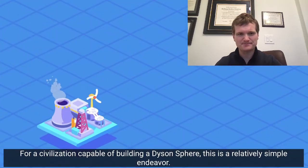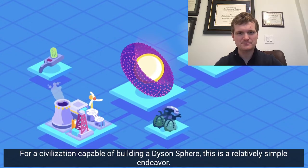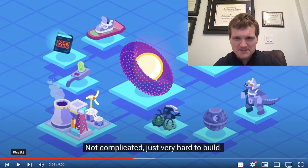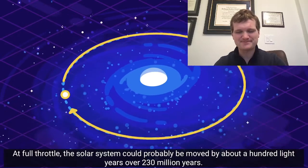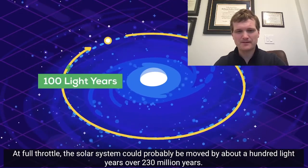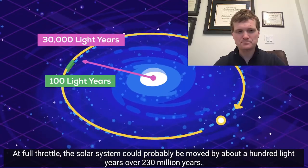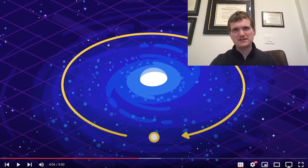For a civilization capable of building a Dyson Sphere, this is a relatively simple endeavor. Not complicated, just very hard. Is it the Death Star? At full throttle, the solar system could probably be moved by about 100 light-years over 230 million years. I know this is a small thing, but they showed a picture of the Death Star there.